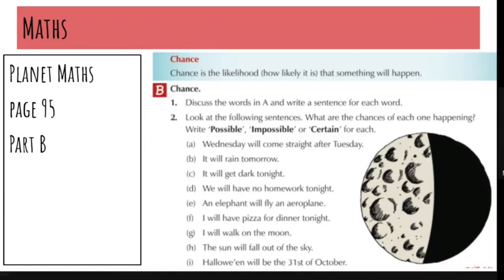So what we're going to do is we're going to use three words that we can use to describe chance to answer a few of these different scenarios. So we're skipping part B, question one. Don't worry about that. We're going on to part B, question two.